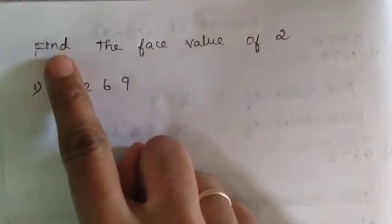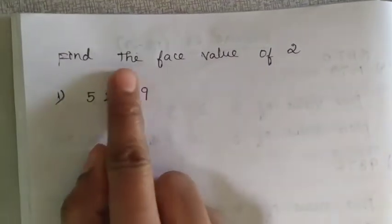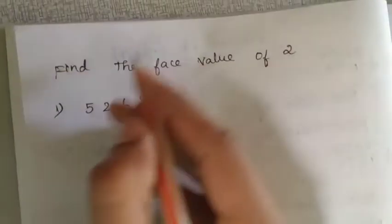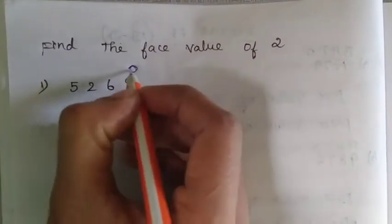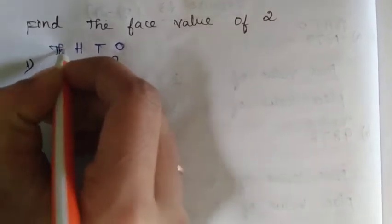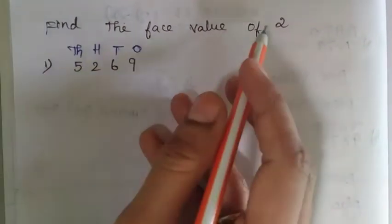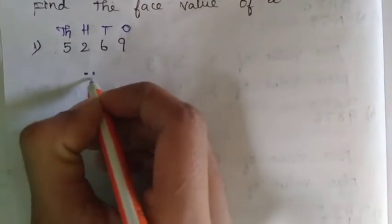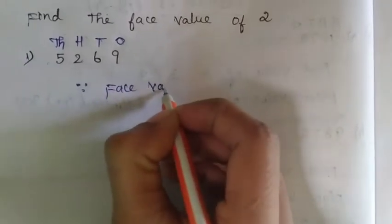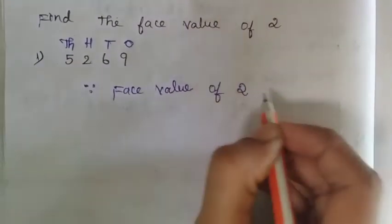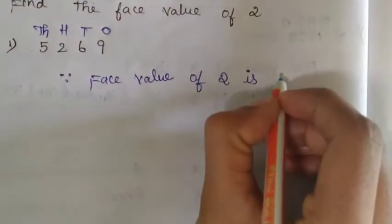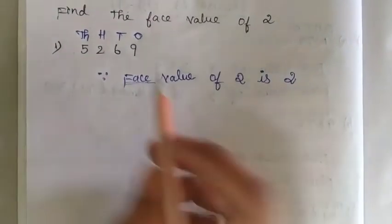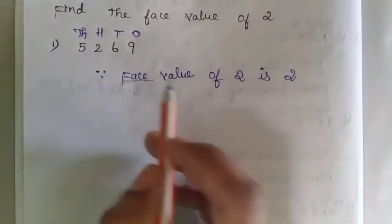Now I am writing one example. Find the face value of 2 in the number 5269. From the last digit, put the unit digit. We want to find the face value of 2 in 5269. What is the answer? The face value of 2 is 2 only — just write the same number. That is called face value. Because our face cannot change.